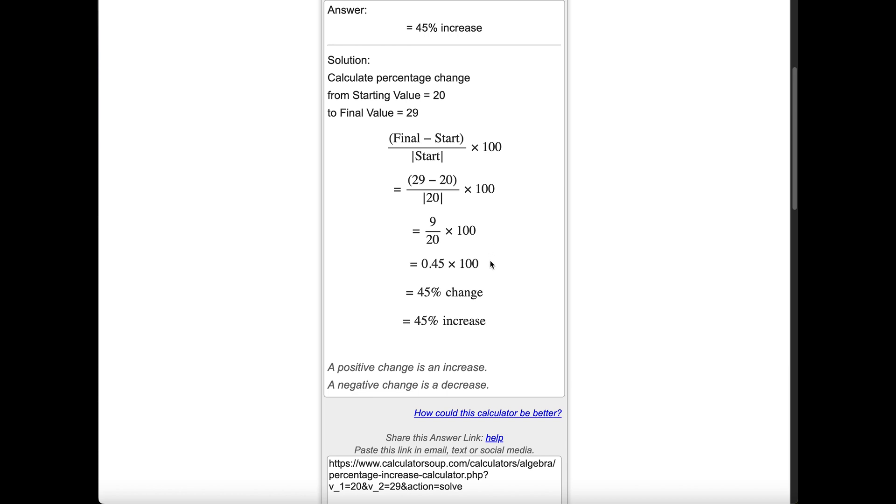Next, 9 divided by 20 is 0.45 times 100. Lastly, 0.45 times 100 is 45, which is positive, so our percent increase is 45%.